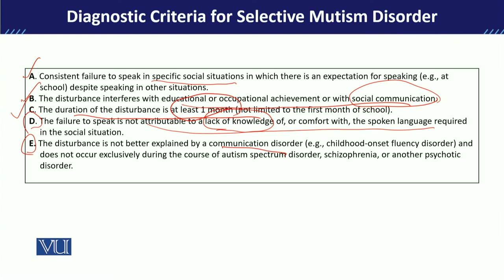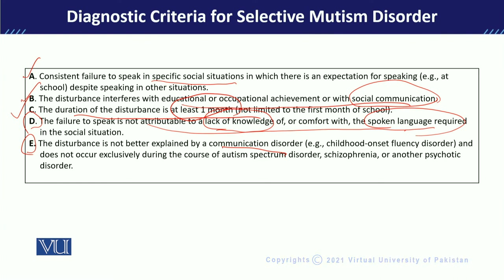Secondly, you must also check whether the child lacks the language required for that situation. For example, if a child is an immigrant who has moved from one country to another with a different language — say, a child from Pakistan who speaks Urdu and has moved to the UK where English is spoken — if the problem is simply that they lack the language skills, that is a different issue and must be considered carefully.